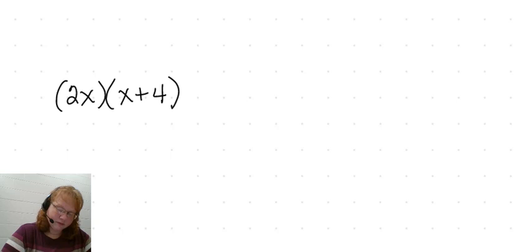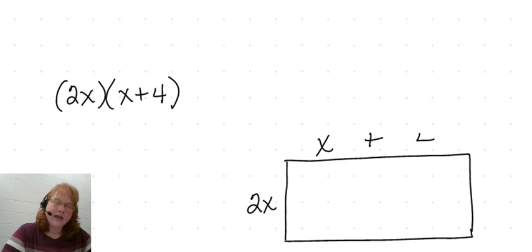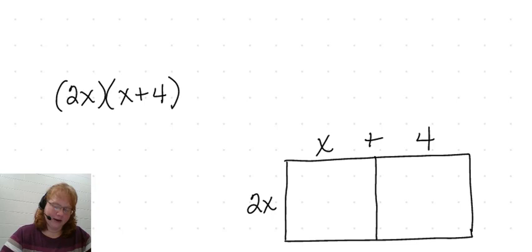I have a couple of examples to help us with unique situations. In this third example, let's take a look at 2x times x plus 4. I'm going to use the area model again. My first expression is 2x, and it's only one term, so I'm not going to be partitioning the rectangle. The top dimension is x plus 4 — it has two terms, so I'll partition that into two parts. This area model looks a little different because we only have two smaller rectangles instead of four, but it still works to help us use the distributive property and multiply.